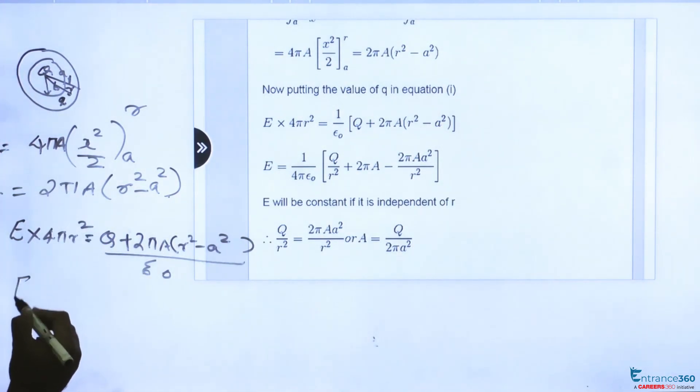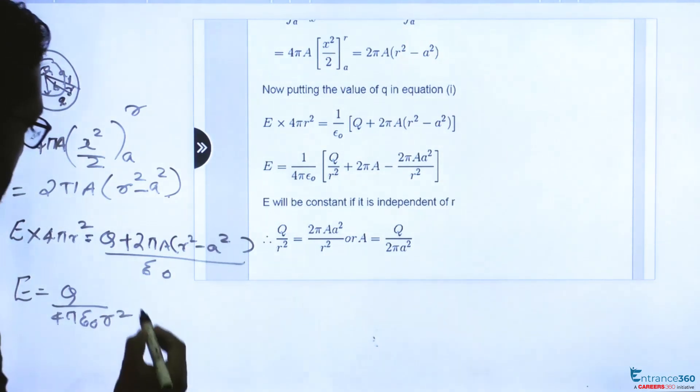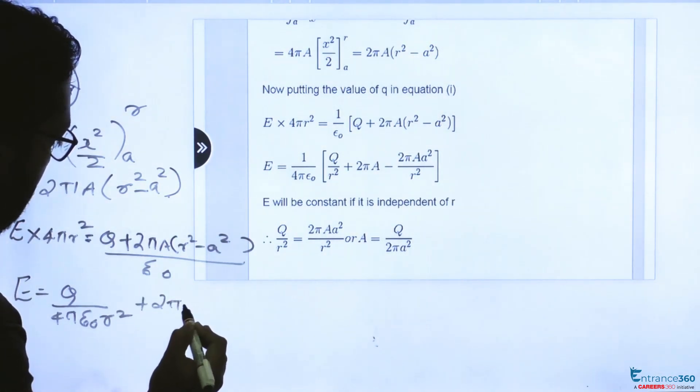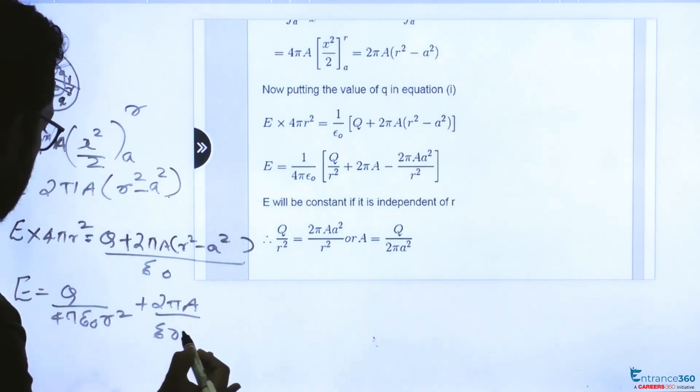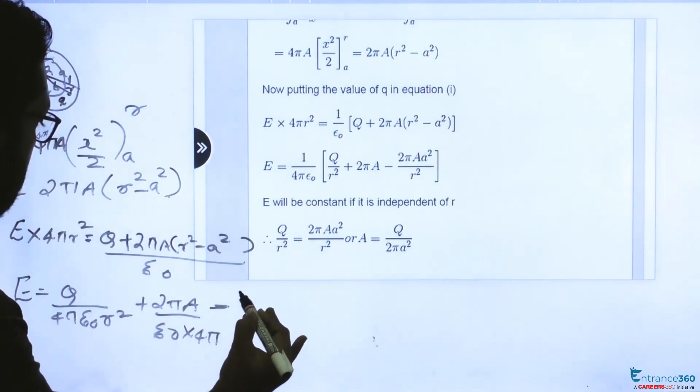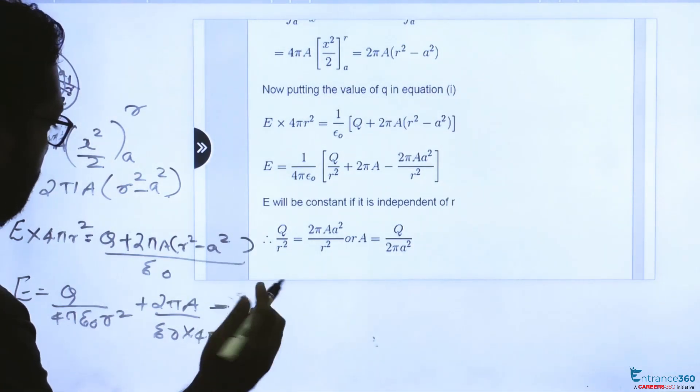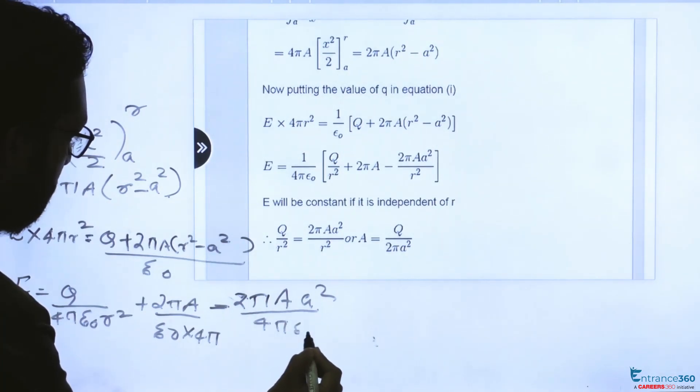So this will be equal to q by 4 pi epsilon 0 R square plus 2 pi A by epsilon 0. So this R square and R square will get cancelled. Remaining term is q minus 2 pi A into A square by 4 pi epsilon 0 R square.